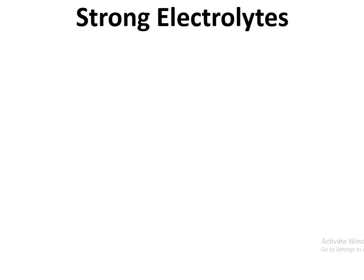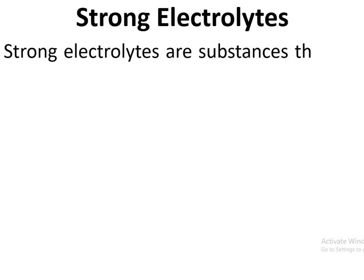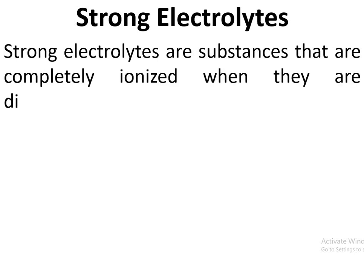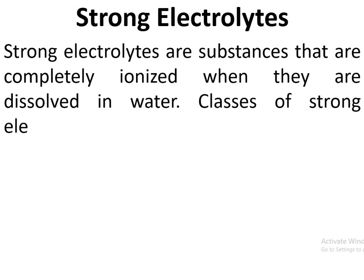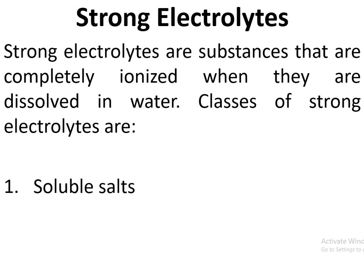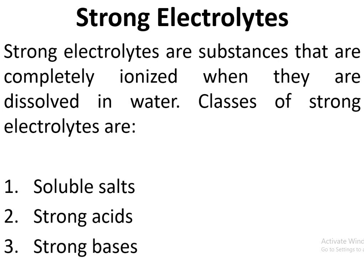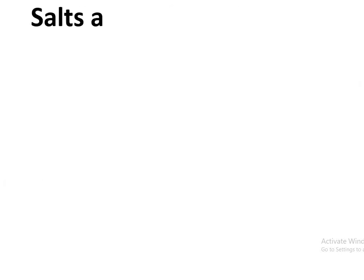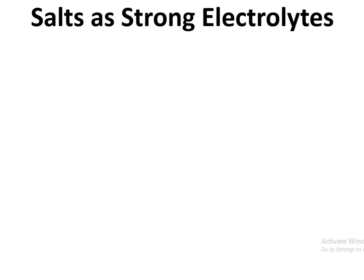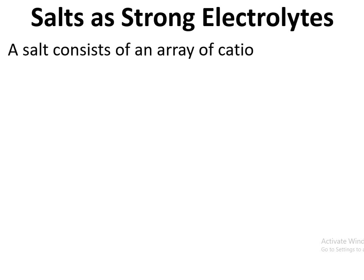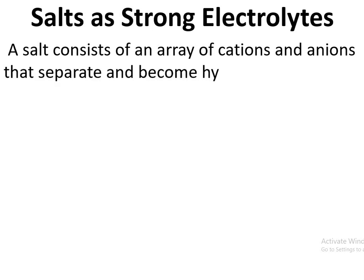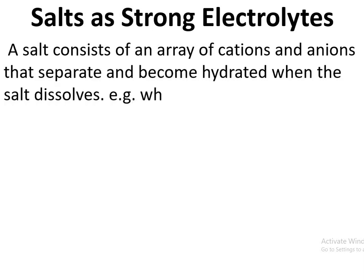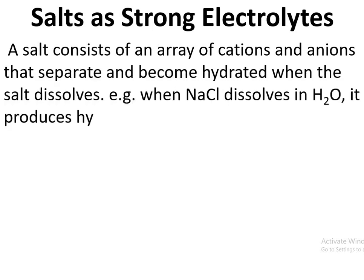Strong electrolytes are substances that are completely ionized when dissolved in water. Classes of strong electrolytes are: first, soluble salts; second, strong acids; and third, strong bases. A salt consists of an array of cations and anions that separate and become hydrated when the salt dissolves.